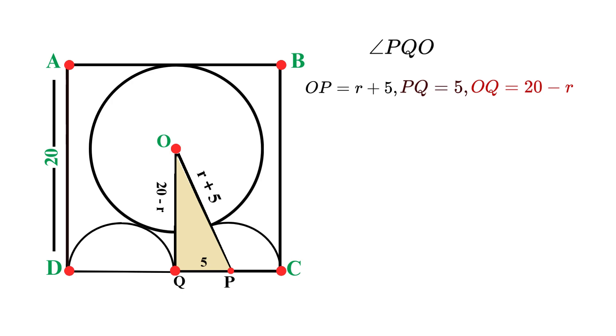Let's identify its three sides. The hypotenuse, the longest side opposite the right angle, which is OP. And we just determined it equals R plus 5. The horizontal leg along the base, which is PQ, that equals 5. And the vertical leg is OQ, which we found earlier, 20 minus R. Now here, we use the Pythagorean theorem.